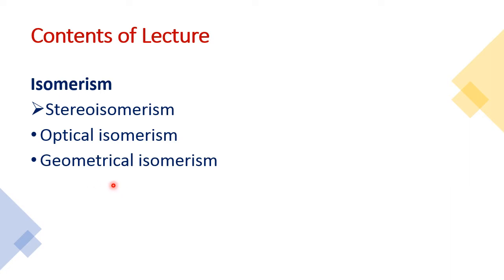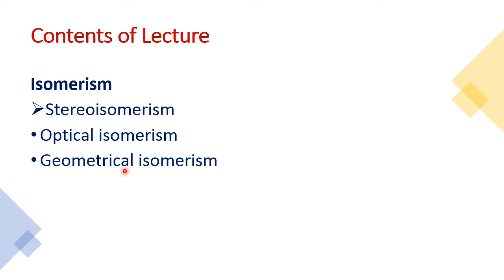Today in our lecture we will discuss the second type of isomerism, that is called stereoisomerism. Stereoisomerism is very important for our knowledge because it has a number of applications in organic chemistry. Stereoisomerism is of two types: optical isomerism and geometrical isomerism.